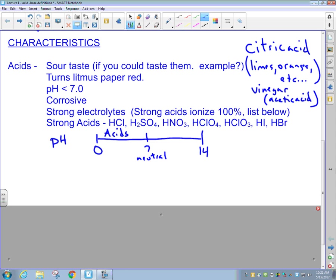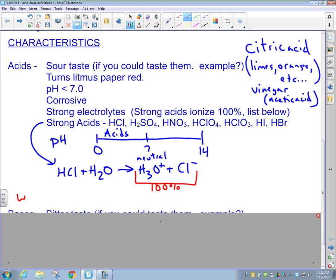A strong acid will ionize 100%. So again you have hydrochloric acid reacting with water to produce the hydronium ion and the chloride ion. Notice I drew a one directional arrow in my chemical reaction there and that is because this reaction is 100% products as a result of that chemical reaction occurring. There are no reactants left versus say a weak acid.